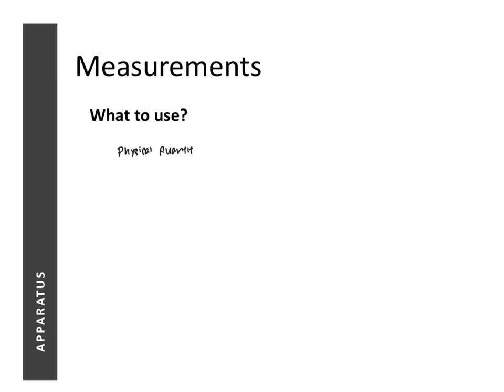There are four physical quantities that we measure very often. The first one being mass, next time, temperature, and lastly, volume. These are the four quantities that we commonly measure. In the first part of this chapter, we need to look at what instruments or apparatus we can use in the lab to measure them.